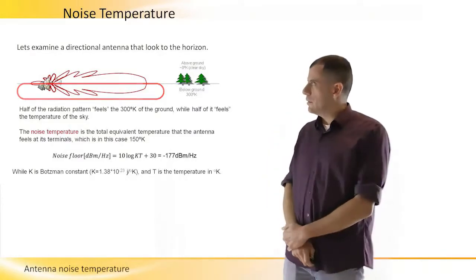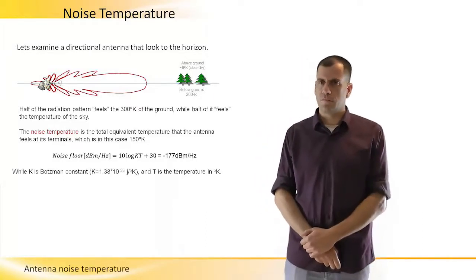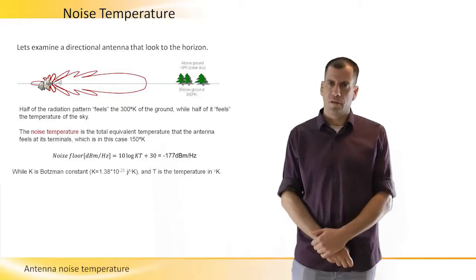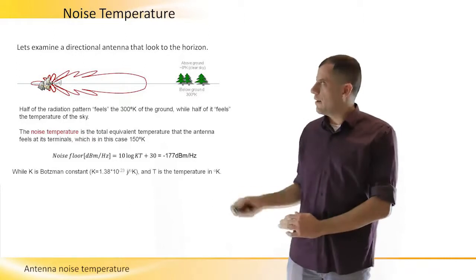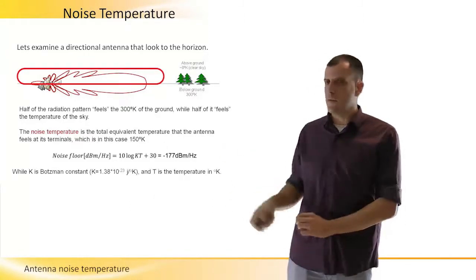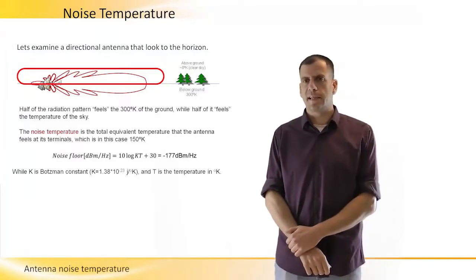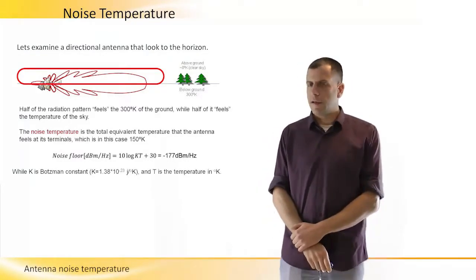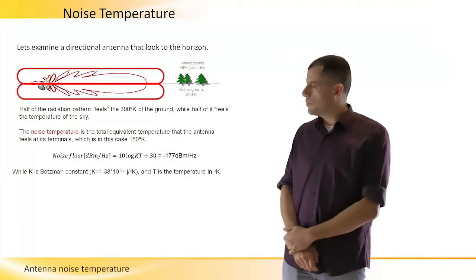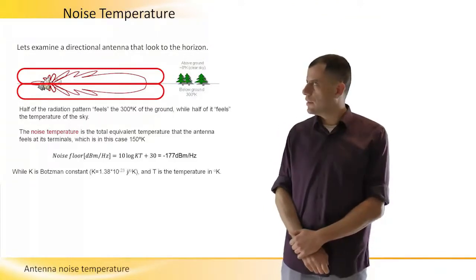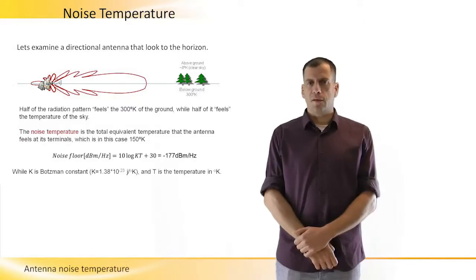So the ground is 300 degrees Kelvin, if we assume an average temperature between all cases on our planet, and the upper half of the radiation pattern, the one that sees the sky, actually feels almost zero degrees Kelvin. If we make an average of this, then we can say that half multiplied by zero plus half multiplied by 300 is 150 degrees Kelvin.